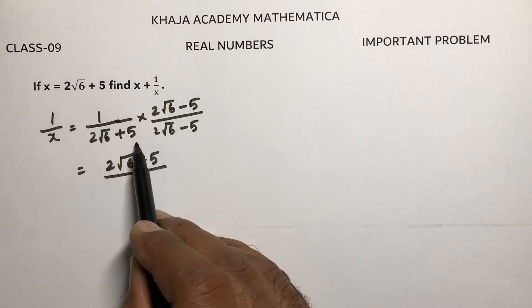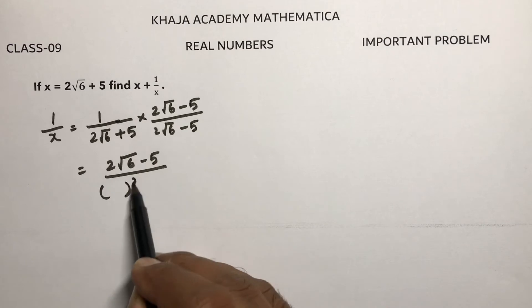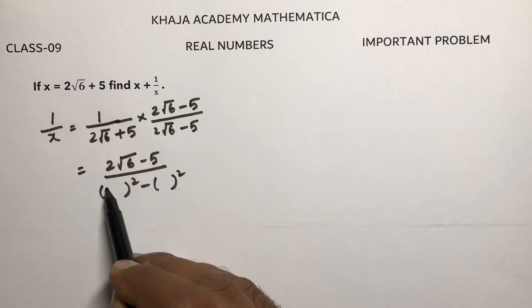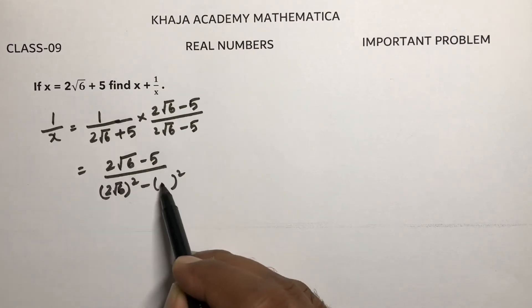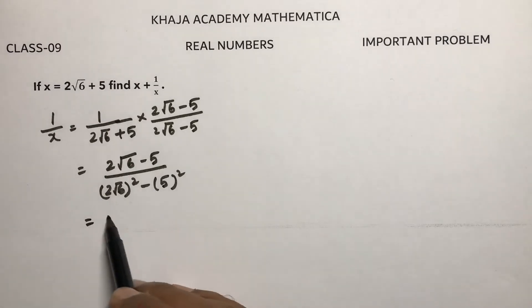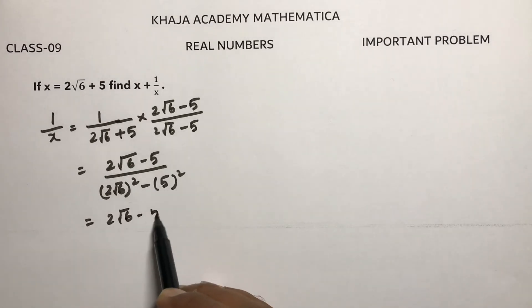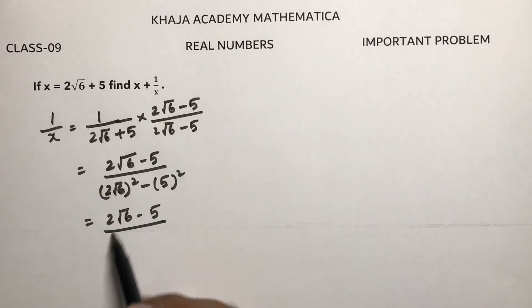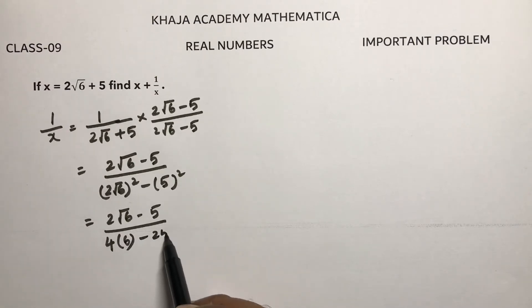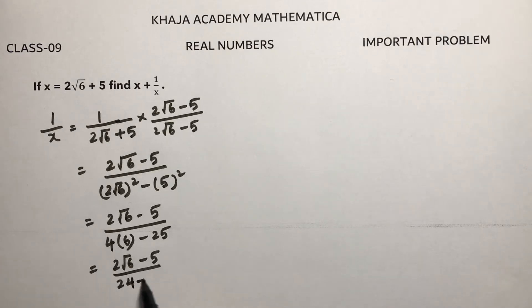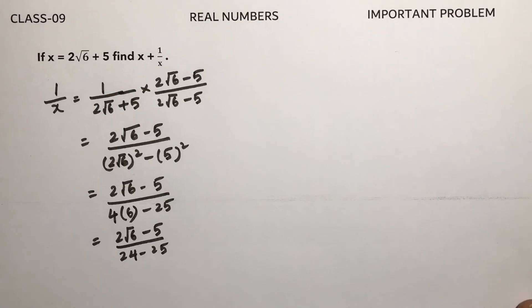And in the denominator, a plus b into a minus b, so a square minus b square. 2 root 6 and here it is 5. So 2 root 6 minus 5, 2 square is 4, root 6 whole square is 6, minus 5 square is 25. So 2 root 6 minus 5 by 24 minus 25.